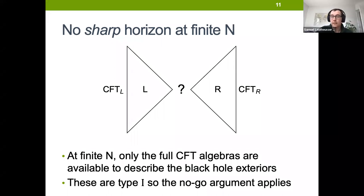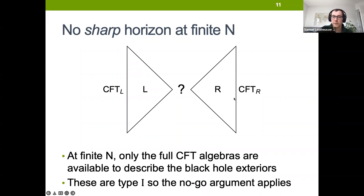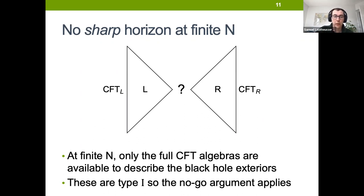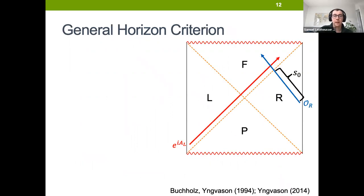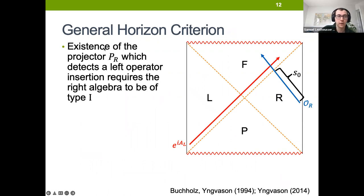At finite N, the only full algebras we have are the full CFT algebras, which are type I, so this no-go argument applies and we can't have an exactly sharp horizon. In order to describe the notion of a horizon, we have to generalize our description of the infalling observer and the measurements they'll make. We can't use the idea of projectors because we might not have those in the algebra we're using to describe these observers — we need a new criterion.